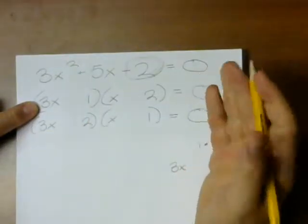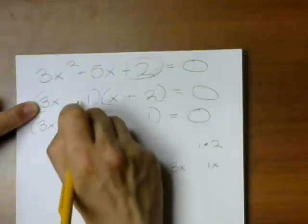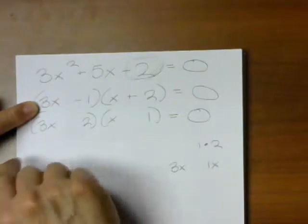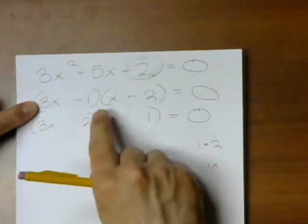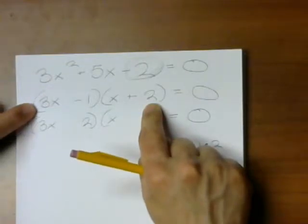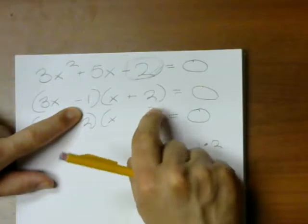Absolutely. How can I do that? Well, if I have a plus 6 and a minus 1, that's going to give me a 5. So that shows me that this is going to work. Notice I'd get 3x squared plus 6x minus 1x, so that gives me a plus 5, and then minus 2.